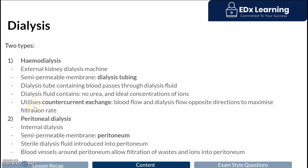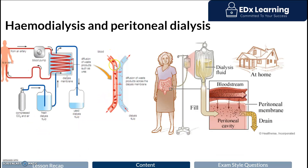For exams, you need to know where each process occurs, what the semi-permeable membrane is, what the dialysis fluid contains, and the unique features of each form. Notably, in hemodialysis, the flow of blood through the dialysis tubing is in the opposite direction to the flow of dialysis fluid. This is called countercurrent exchange, and it aims to maximize the diffusion of waste products out of the blood and into the dialysis fluid.